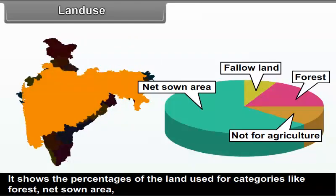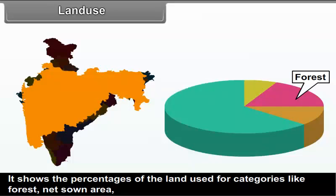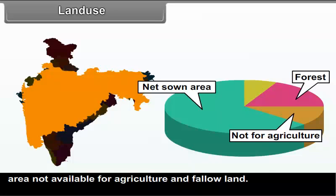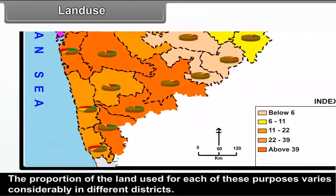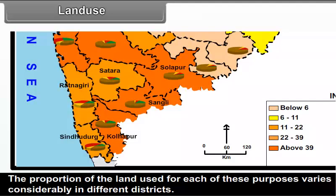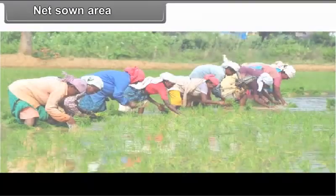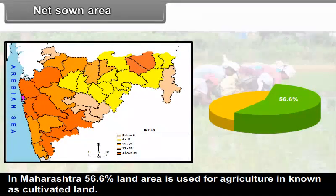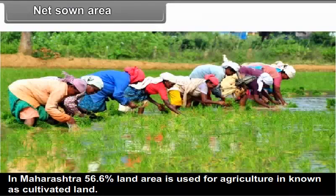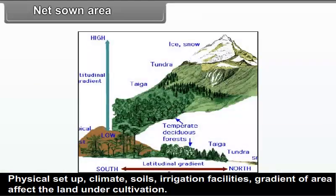Figure 2.1 shows the percentages of the land used for categories like forest, net sown area, area not available for agriculture and fallow land. The proportion of the land used for each of these purposes varies considerably in different districts, as shown in figure 2.2 depicting land use pattern of each district. Net Sown Area: In Maharashtra, 56.6% of land area is used for agriculture, known as cultivated land. Physical setup, climate, soils, irrigation facilities and gradient of area affect the land under cultivation.